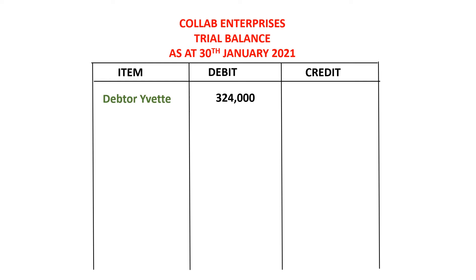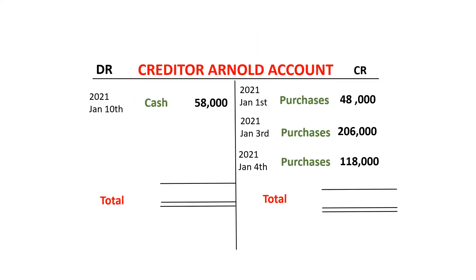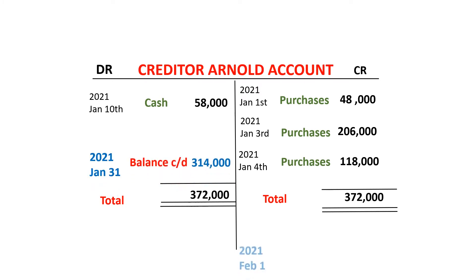Let's look at the case if it was a credit balance. We have here a creditor account. A creditor is a liability account, and all liability accounts have credit balances. What you can see is that the credit side is bigger than the debit side. If we are to balance this off, you realize that the balance carried down is 314,000, and the balance brought down is also 314,000. This is a credit balance — the credit side of this account is bigger than the debit side by 314,000.